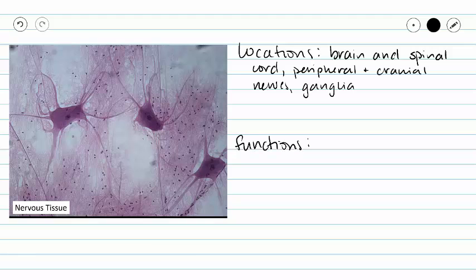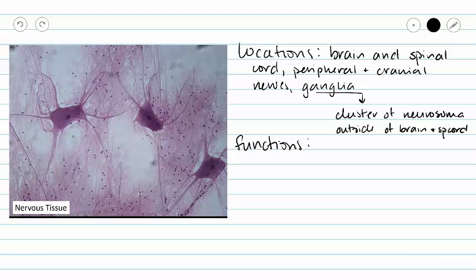A ganglion is a cluster of neuron cell bodies in the peripheral nervous system that is outside of our brain and spinal cord. And please forgive me, I ran out of room and had to abbreviate spinal cord.